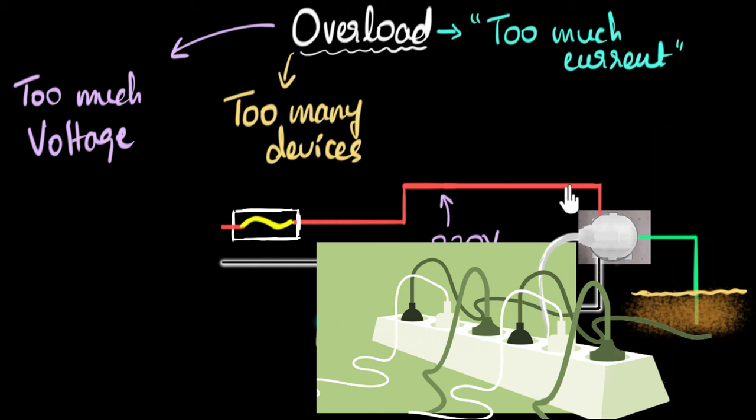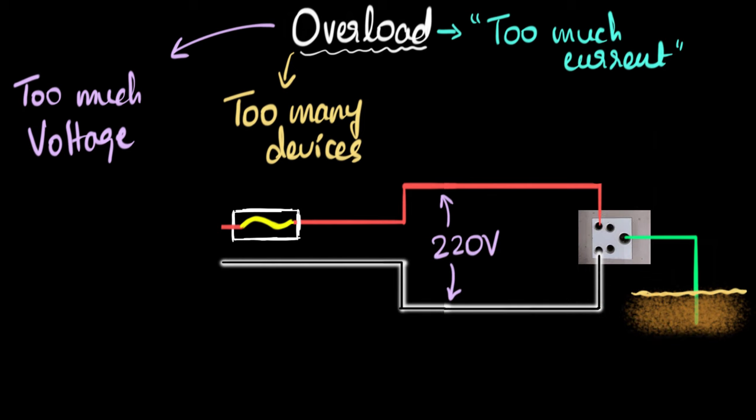The more devices you attach, the more current gets drawn, and again, eventually, the same problem can happen. If the current drawn is just too much, it's more than the capacity of this, then we say there's an overload happening. So this time, the overload happened because too many devices were attached, and that's why it's always advisable not to do this. In fact, in a lot of books, many people will say, that's basically what overloading means, but this is just one of the ways to overload. Overload is a very general term.